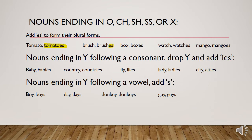When we talk about nouns ending in Y where that Y is followed by a consonant, we drop the Y and add 'IES'. We eliminate the Y at the end and exchange it with 'IES' to make the plural form. For example, 'baby' becomes 'babies'. We also have 'countries', 'flies', 'ladies', and 'cities' — these are plural forms of nouns ending in Y followed by a consonant.